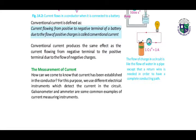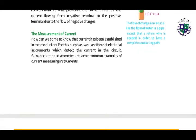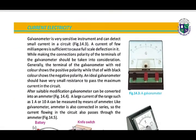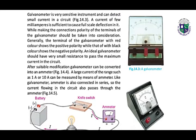How can we measure the current? We have two different types of instruments. One is the galvanometer. This is a picture of a galvanometer. It is a very sensitive instrument that can detect small current in a circuit. A current of a few milliamperes is sufficient to cause full-scale deflection on it, as shown by the deflection here.